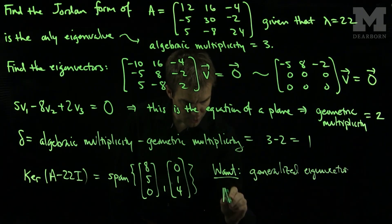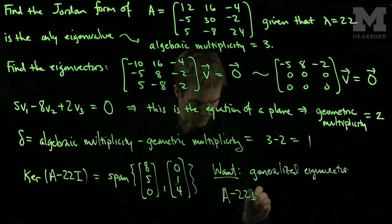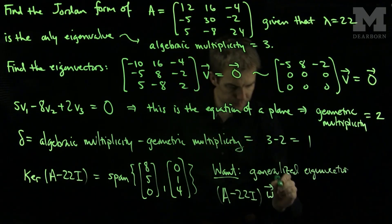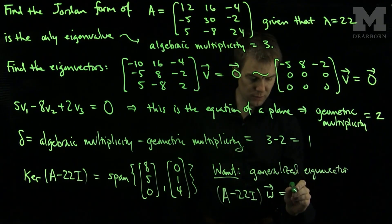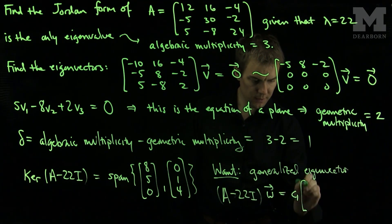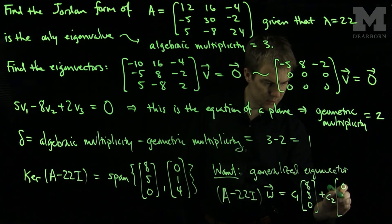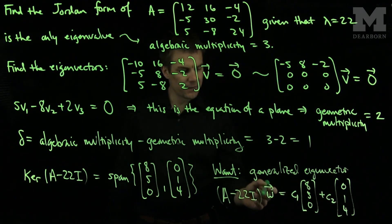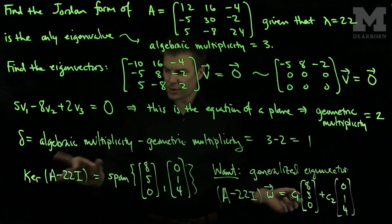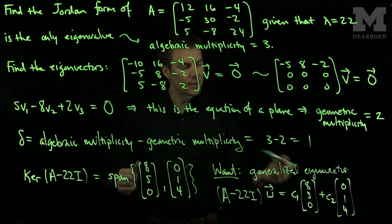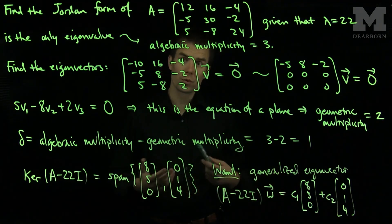Now we want a generalized eigenvector. We would like to solve the equation (A - 22I)W = C1*V1 + C2*V2, where V1 = (8, 5, 0) and V2 = (0, 1, 4). Once we find this generalized eigenvector W, we can change the basis and put the matrix into Jordan form.